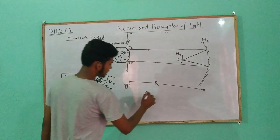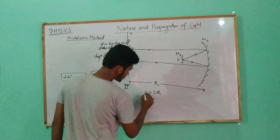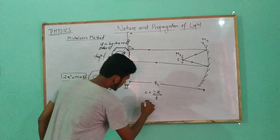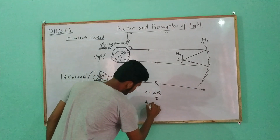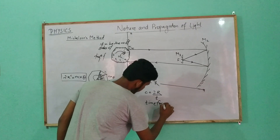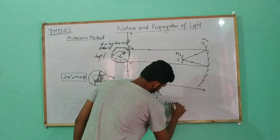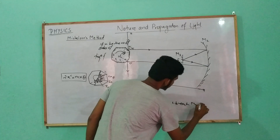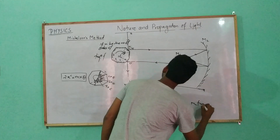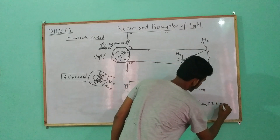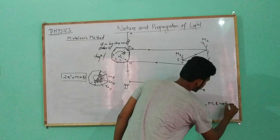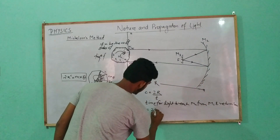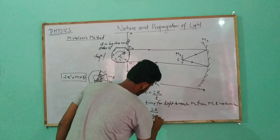Distance r plus r equals 2r. Velocity equals distance divided by time. The time for light to travel from the mirror and return back is t equals 2r divided by c. So this time here is 2r by c. This is equation 1.